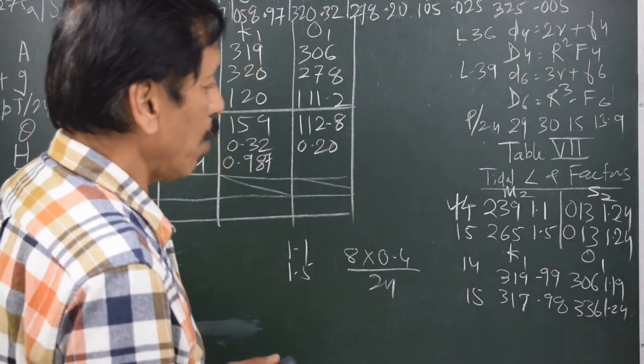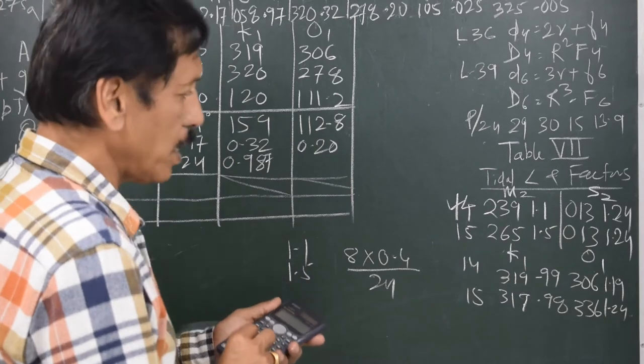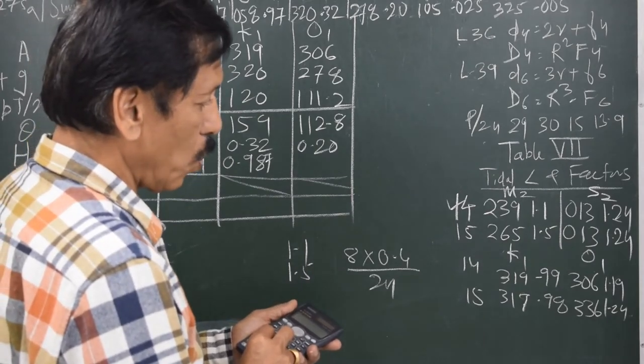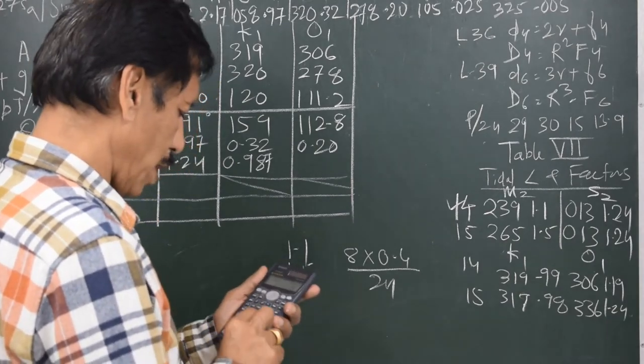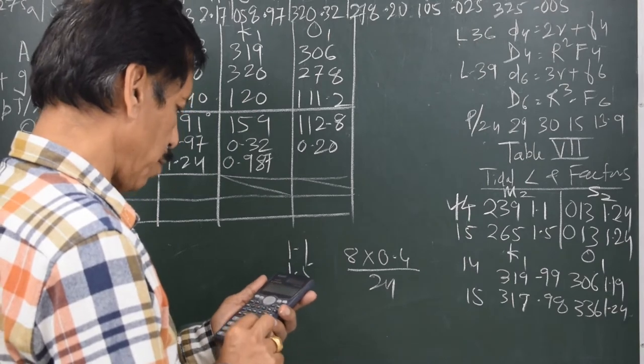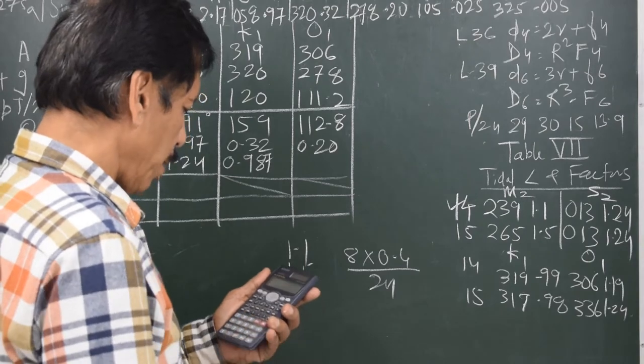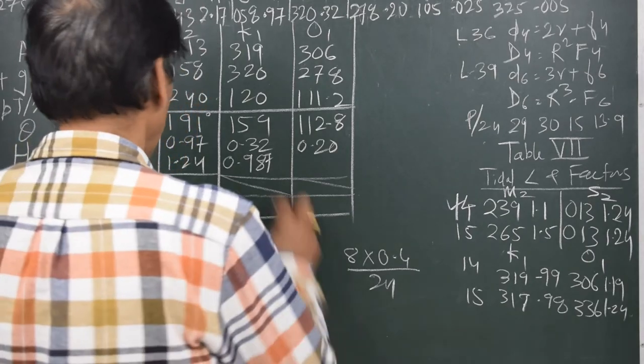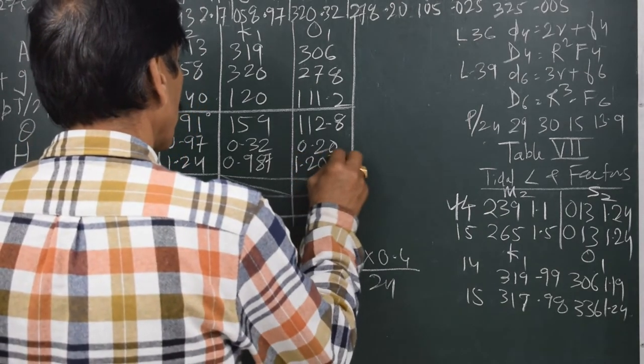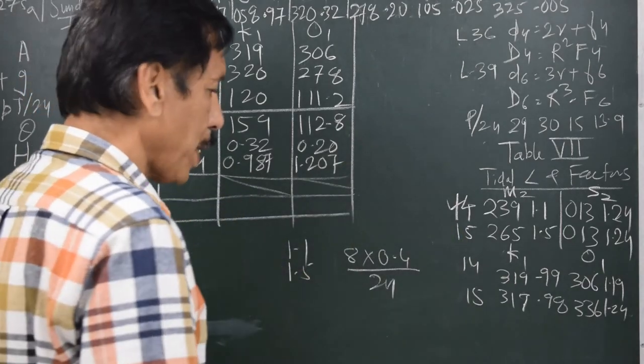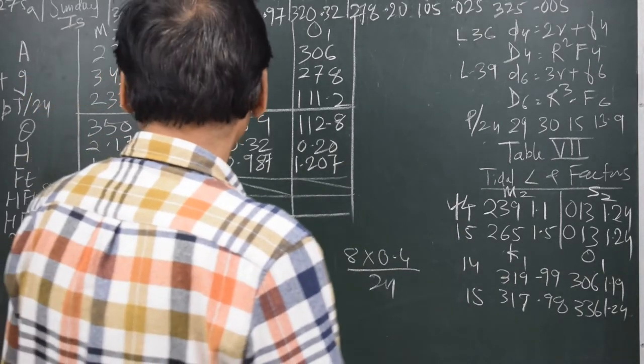And the last value O1: 1.19 and 1.24. It is changing by 0.05 divided by 3 makes it 0.017 plus 1.19 makes it 1.207. 1.207 is the factor there.